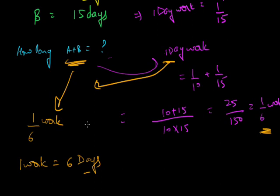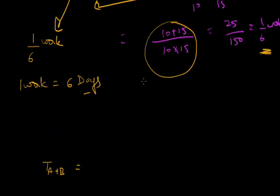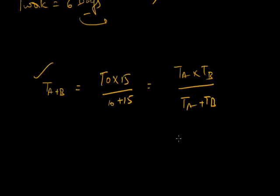Now let me tell you why I said not to take the LCM and instead directly cross multiply. The time taken by A and B together, T(A+B), is the reciprocal of (1/10 + 1/15), which gives T(A+B) = (TA × TB) / (TA + TB). Here TA = 10 and TB = 15. So this is the shortcut: if two persons work together, we use the harmonic mean formula TA × TB divided by TA plus TB.